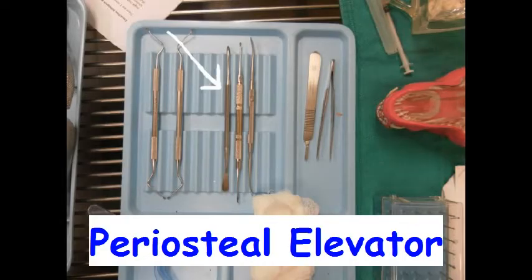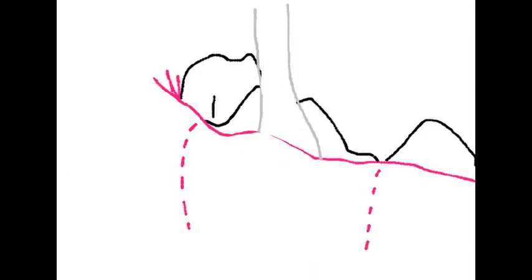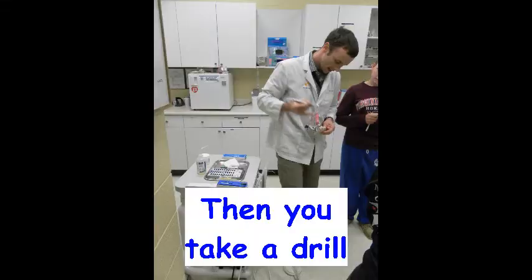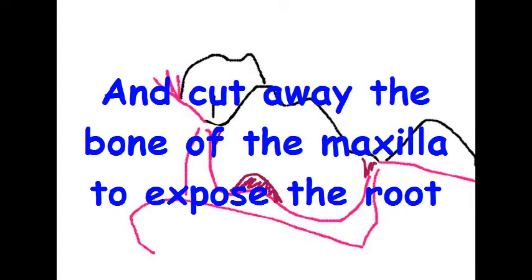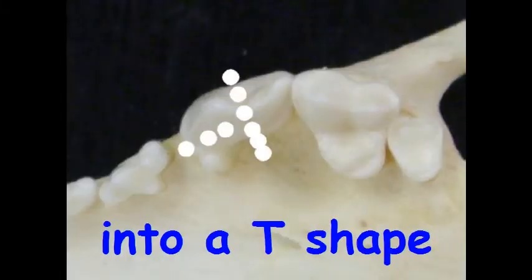Pick up your periosteal elevator and make this motion to expose the bone. Then take a drill and cut away the bone of the maxilla to expose the root. Then you section the tooth into a T-shape.